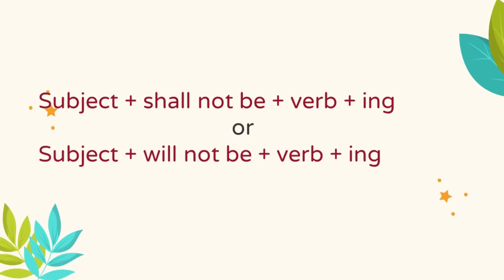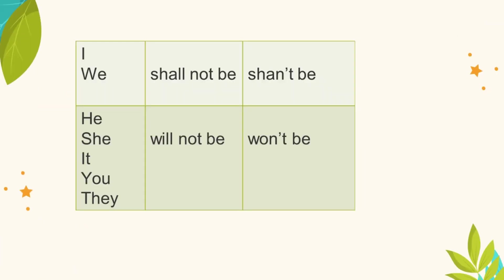We form the Future Continuous Tense in the negative like this: subject plus shall not be plus verb plus ing, or subject plus will not be plus verb plus ing. We say: I shall not be, we shall not be, or using the contraction, shan't be.